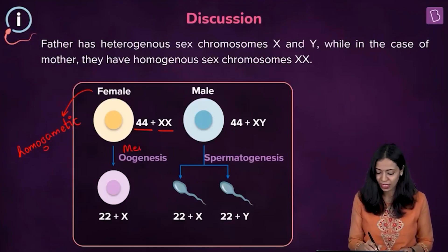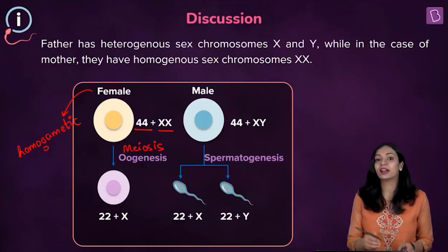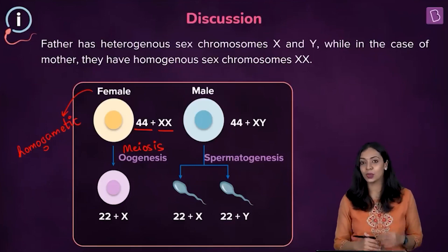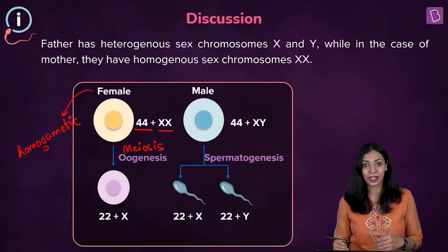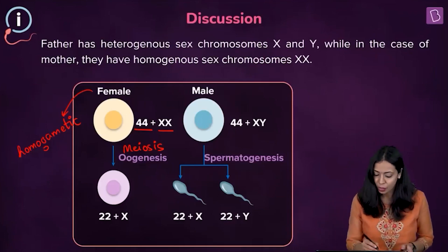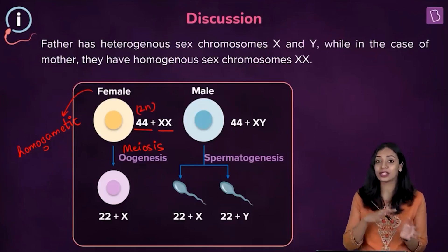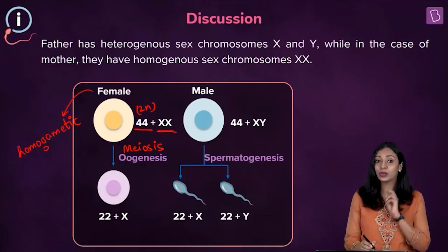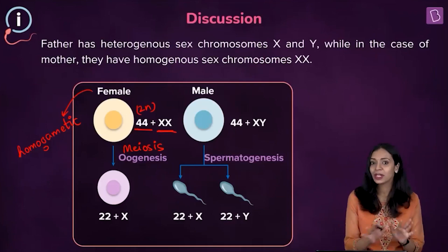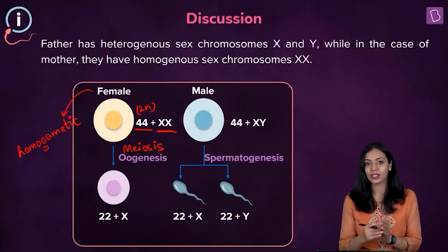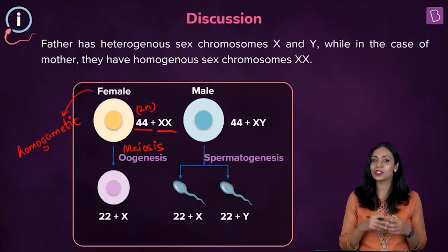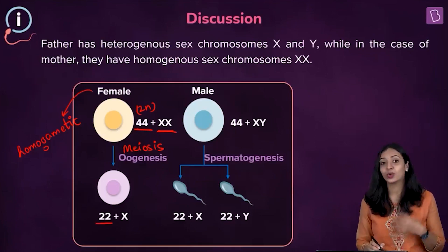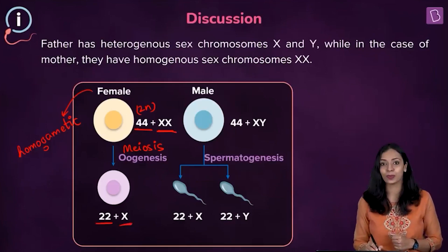During meiosis, the diploid cell with 46 chromosomes gives rise to cells with half the number. In females, starting with 44 autosomes and two X chromosomes, after meiosis you get cells with 22 autosomes and one X chromosome. Since both sex chromosomes are of the same type, females can produce only one type of gamete.